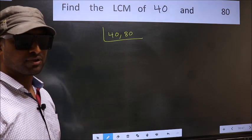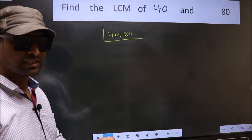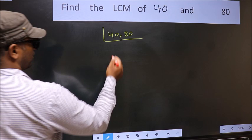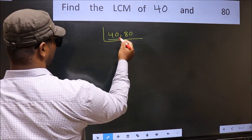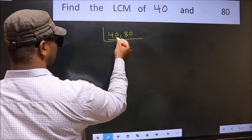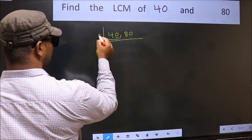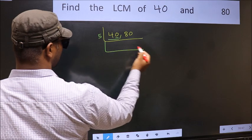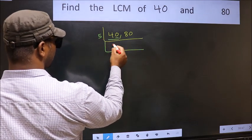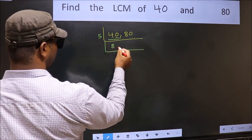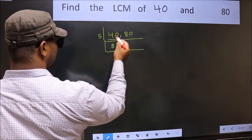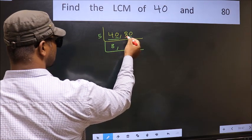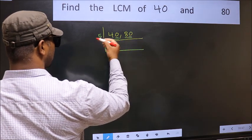Now focus on the first number, which is 40. The last digit is 0, so directly take 5. When do we get 40 in the 5 table? 5 times 8 is 40. The other number is 80. Last digit is 0, so this is divisible by 5.